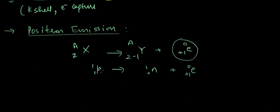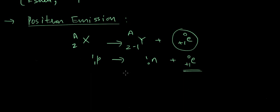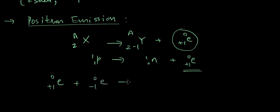A proton can convert into a neutron by emission of a positron. Also, a positron can interact with or annihilate an electron to form a gamma particle.